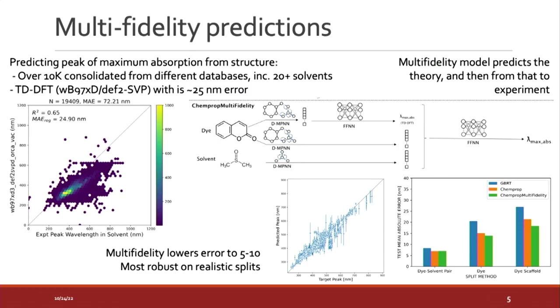On multifidelity: I have a UV absorption property example where we mixed low-fidelity simulation data with high-fidelity experimental data, and it turns out we do much better mixing the two predictions together. We make a graph neural network that predicts what theory would have said — saving yourself the theory — and then another model that maps theory predictions to experimental values. Each one does some of the legwork from structure to experiment. And once one does scaffold splits, all these tricks start being most useful because there is more actual inductive bias and more first-principles information embedded.